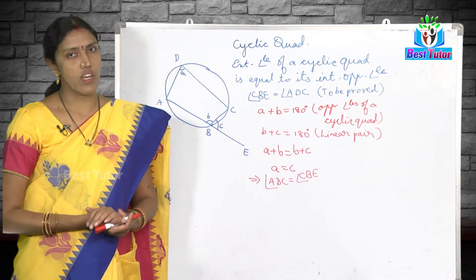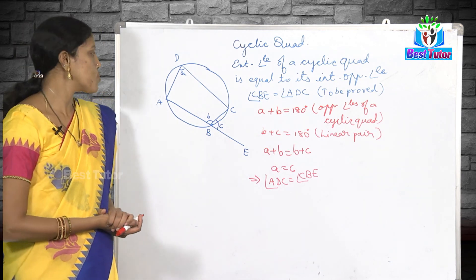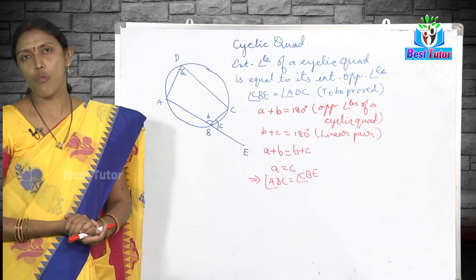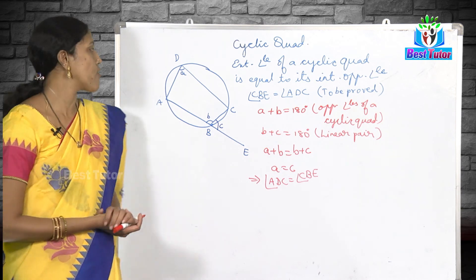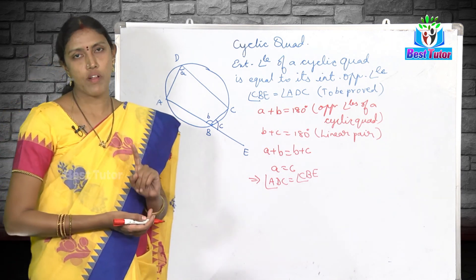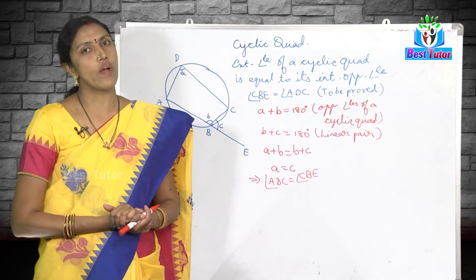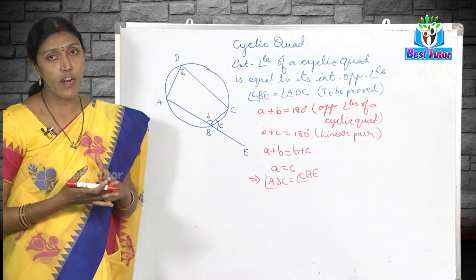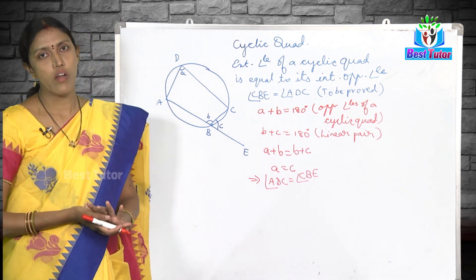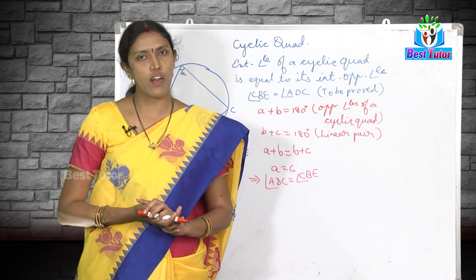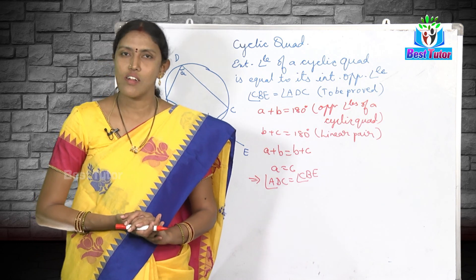In this video we have proved two statements: one, opposite angles of a cyclic quadrilateral are supplementary; two, the exterior angle of a cyclic quadrilateral is equal to its interior opposite angle. Both theorems were proved using the concept that the angle subtended by an arc at the center is twice the angle subtended by the same arc at any point on the circumference. In coming videos we are going to learn many more properties of circles. Thank you.